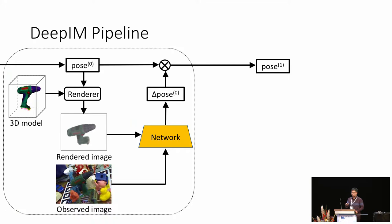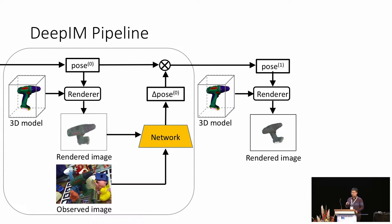We can now iterate through this process, just like in the first step. Pose one can be used to generate a rendered image, image feeds to the network, and the network predicts another transformation. DeepIM uses this new transformation to update pose one again. This update can be repeated during training and testing for a desired number of times, which we call iterative training and testing.